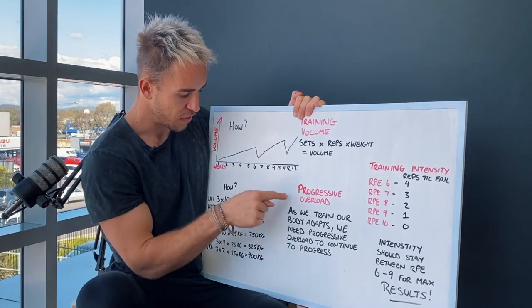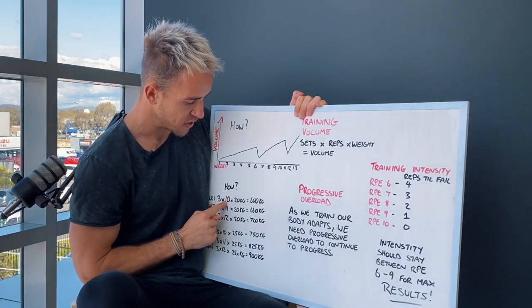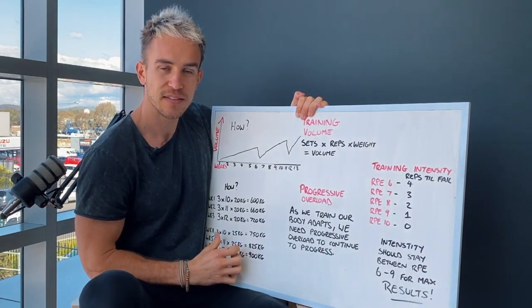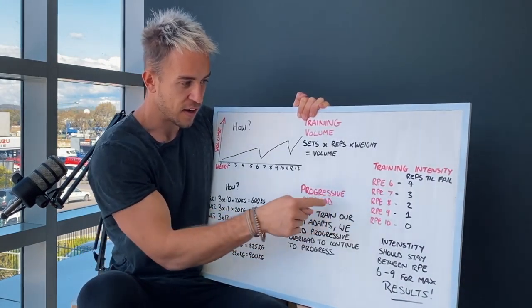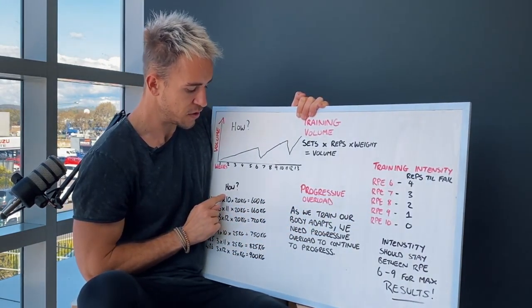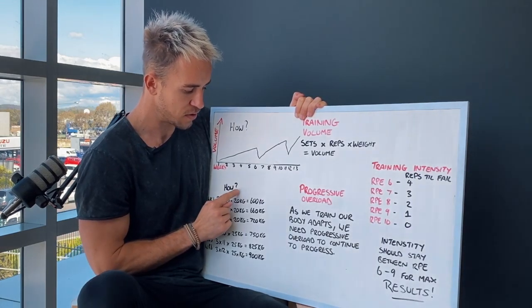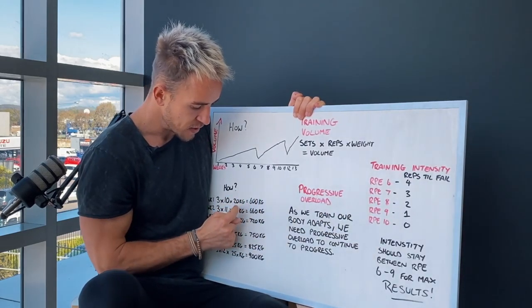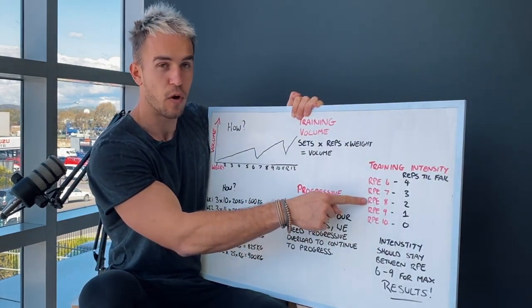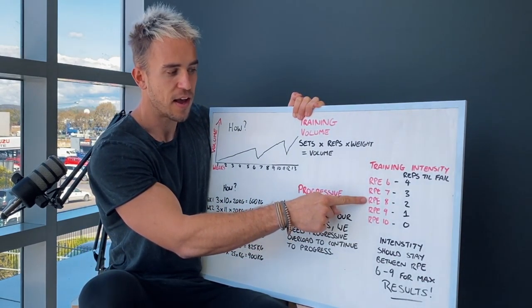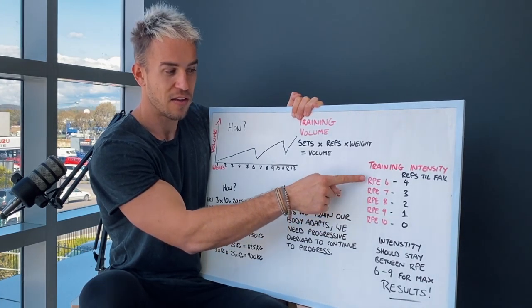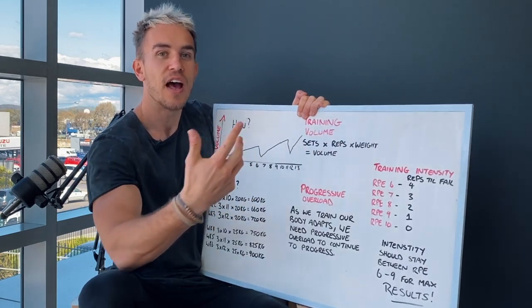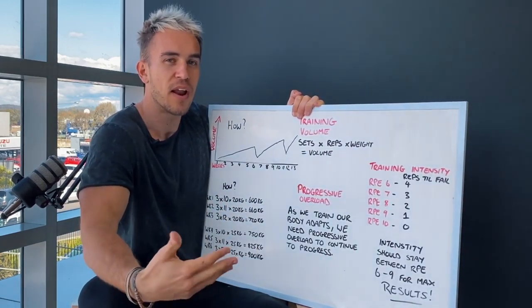You're going to see that if we were to keep doing 3 sets of 10 at this weight of 20 kilos continuously throughout the next 6 or 7 weeks. And it starts off quite challenging, 3 sets of 10 at 20 kilos would give us that 600 kilos. And it starts off feeling like an RPE of 8. But as the weeks go on, it won't always feel like an RPE of 8. And it'll start to feel like an RPE of 7. Then a 6. And then potentially a 5 and a 4 and a 3. And it becomes not really effective for where our goals are anymore.